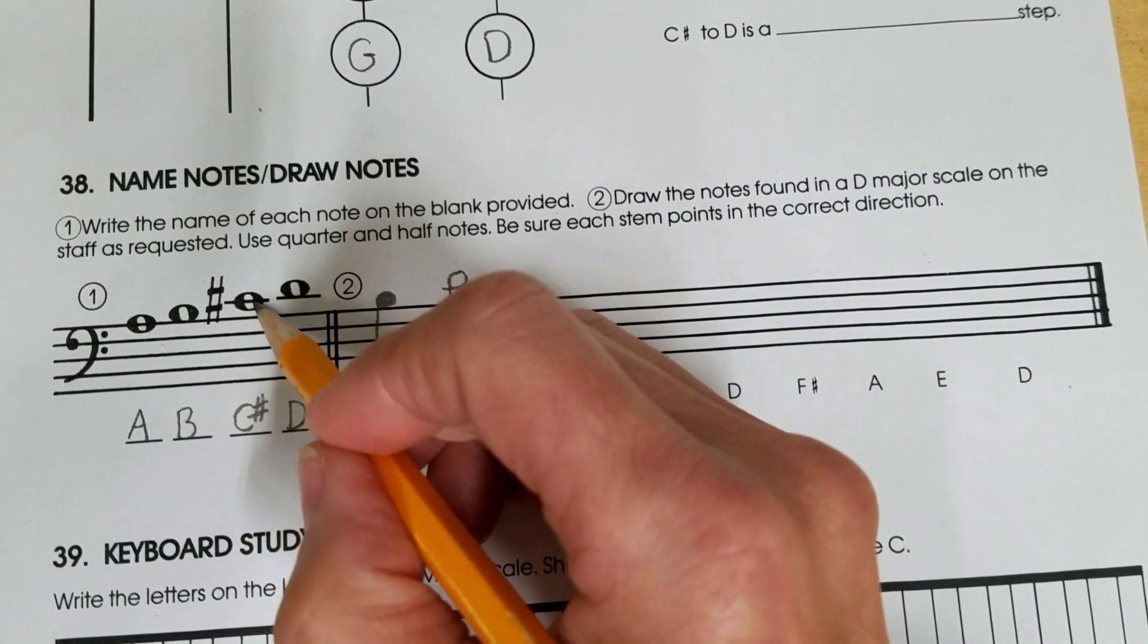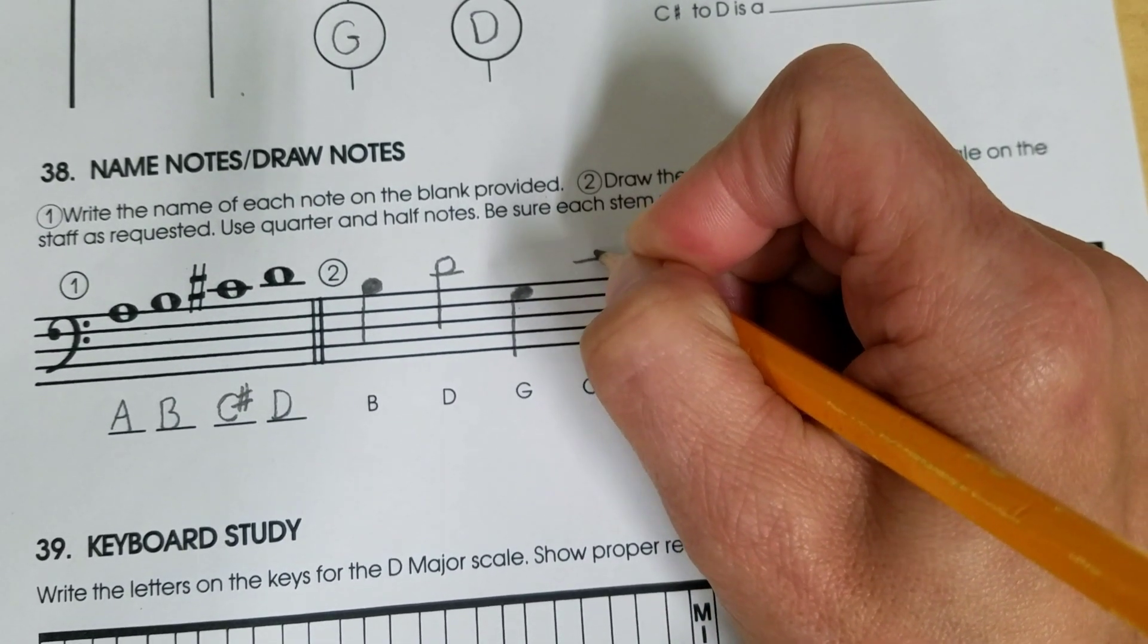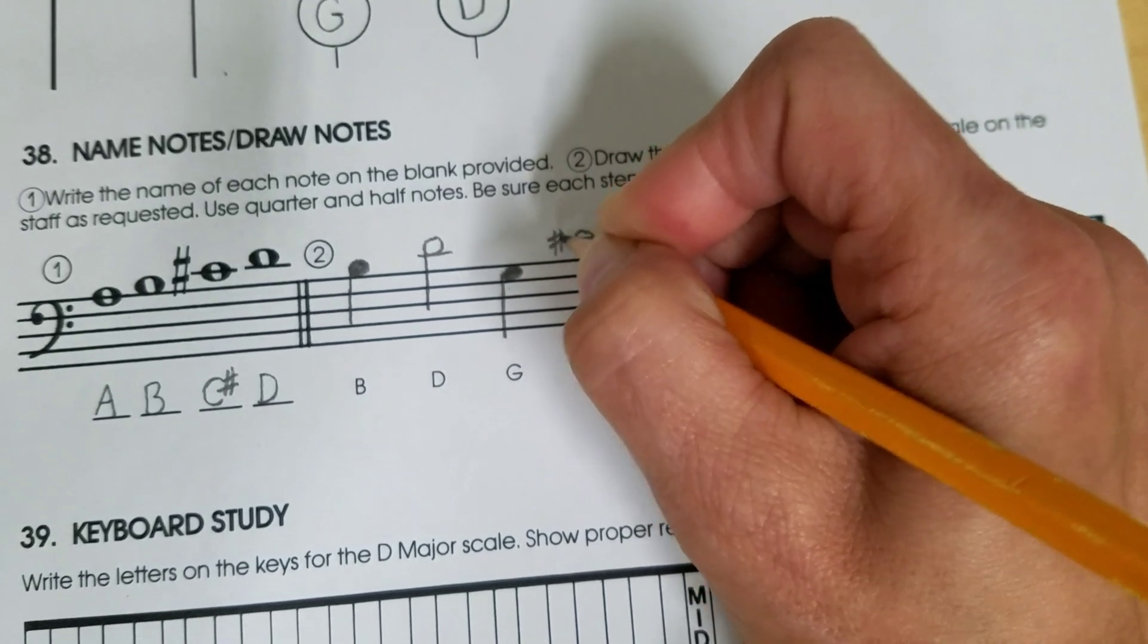C sharp uses one ledger line and goes around the note. Let me give it a sharp sign and a stem.